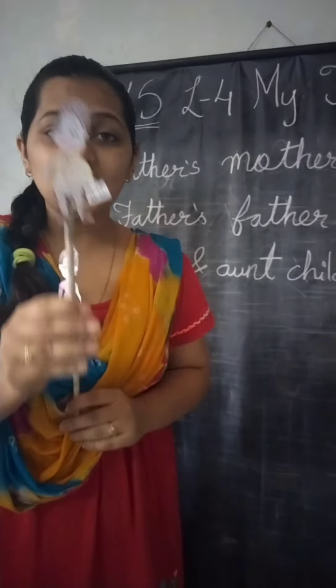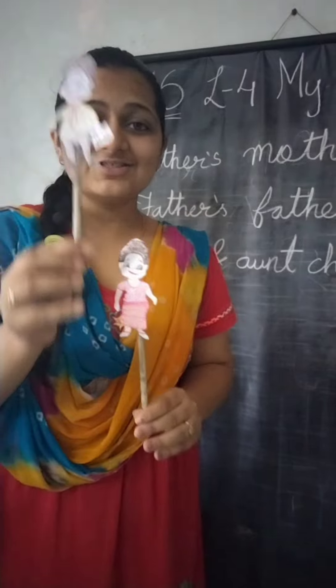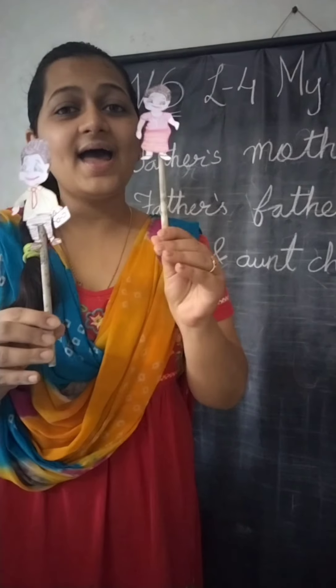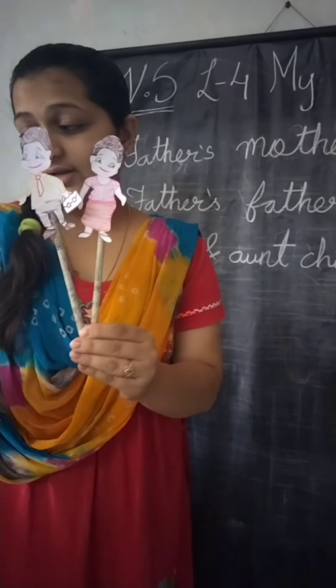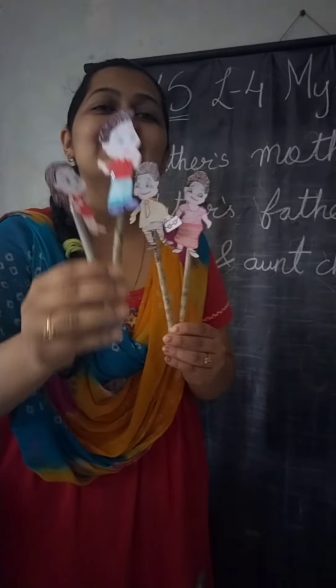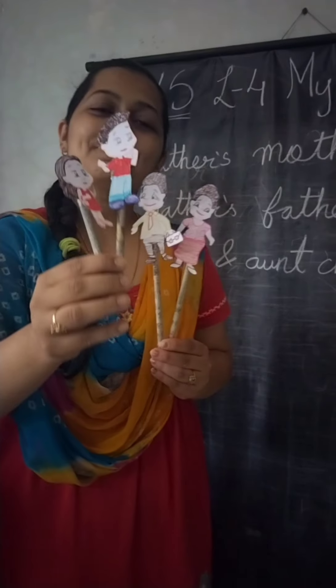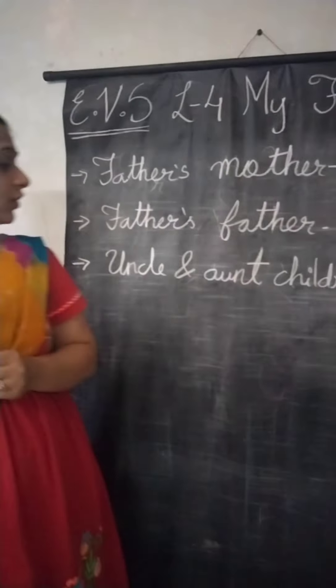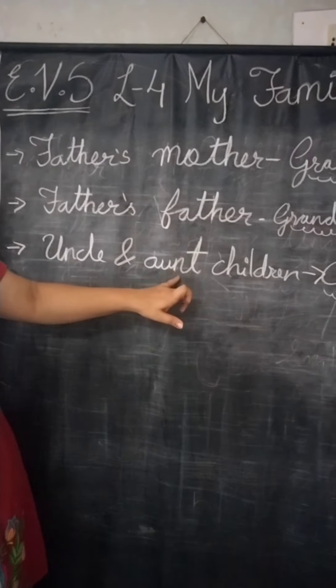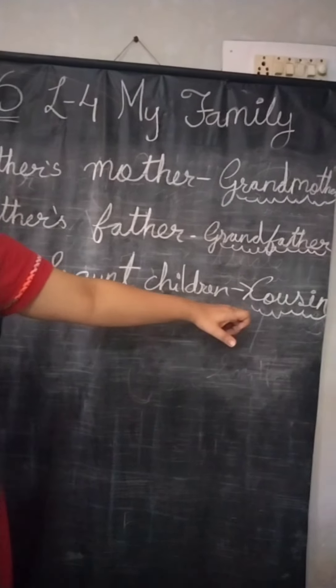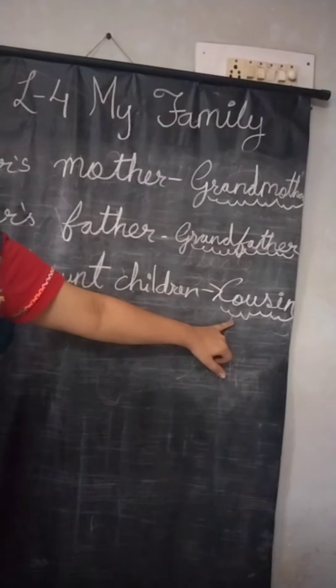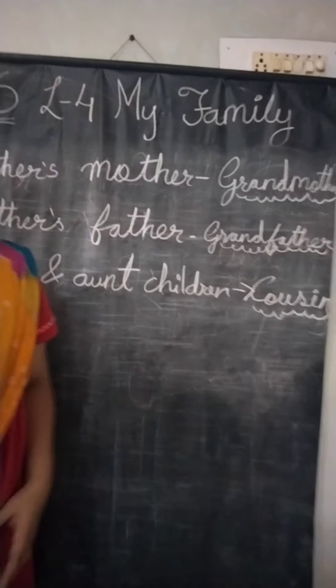Now next is your uncle and aunt's children. Aapke uncle or aunt means chacha and chachi ke children — children means unke bachhe, kya huye? Aapke cousins. Uncle and auntie ke children kya huye? Aapke cousins. So uncle and aunt's children are known as cousins.